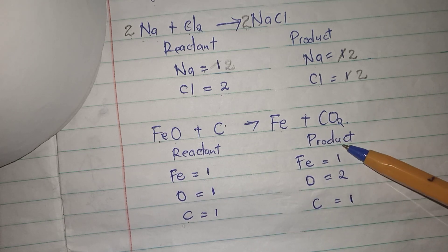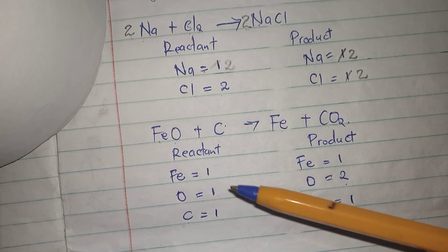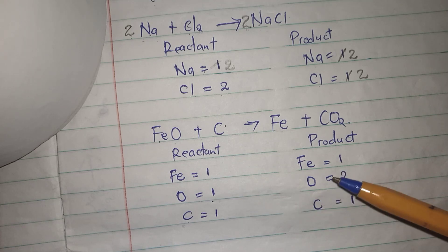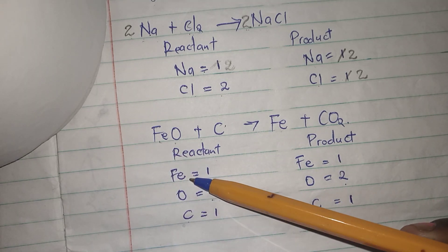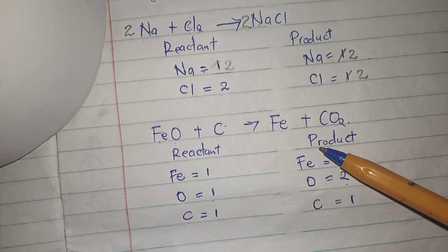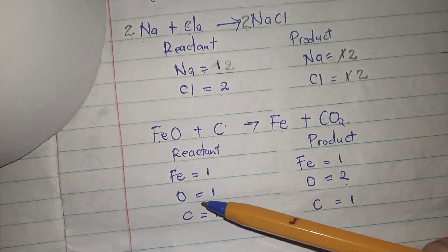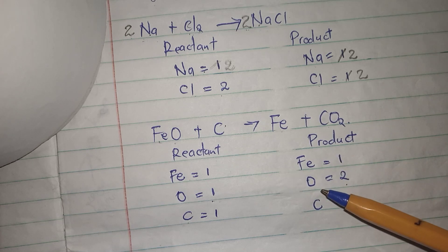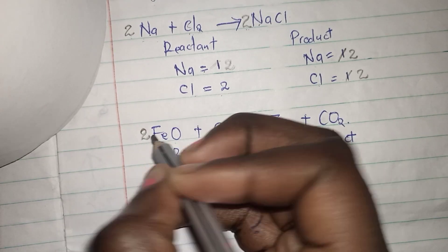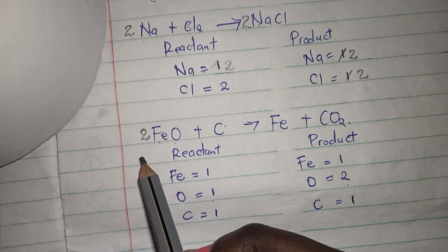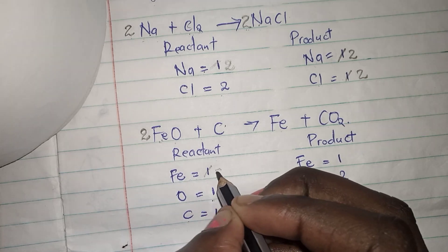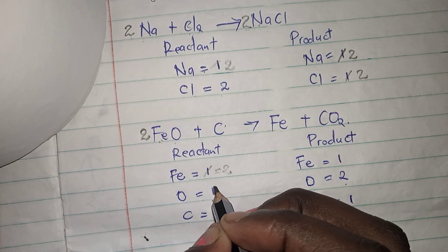This equation is not balanced because on my product side I have two oxygen, but on my reactant side I have only one oxygen. To balance it, let us start with iron: on the reactant side it's one, on the product side it's one, so iron is balanced. But oxygen on the reactant side and product side is not balanced. To balance it I'll place a two here. When I place two here, I've affected the number of iron atoms — so iron will change to two and oxygen will be two as well.